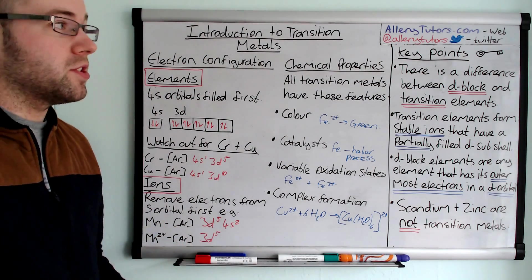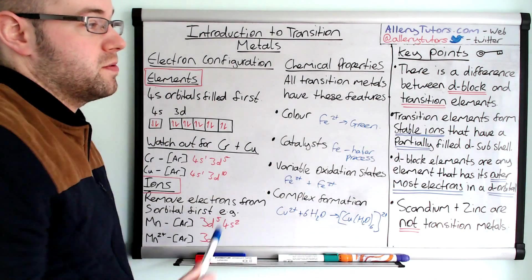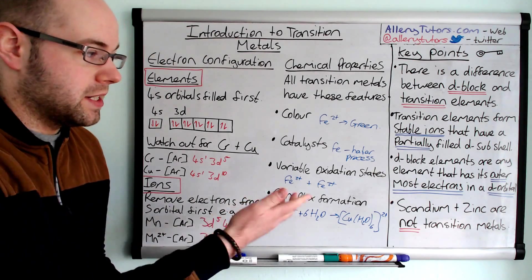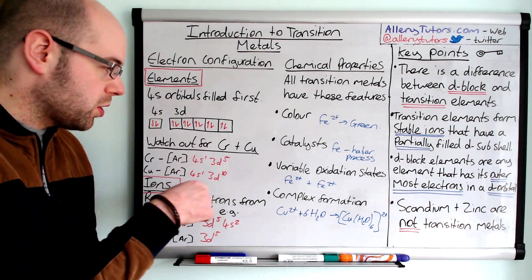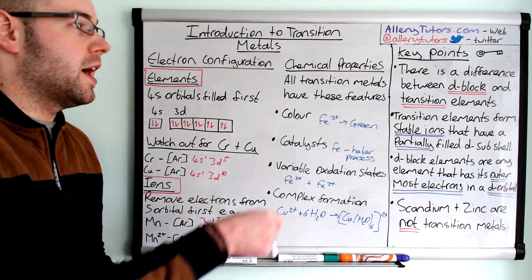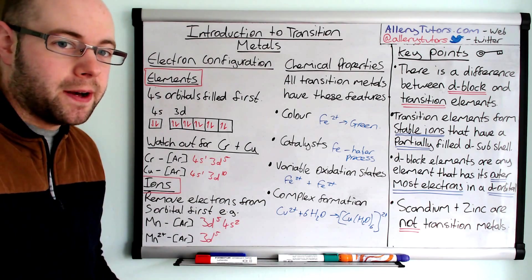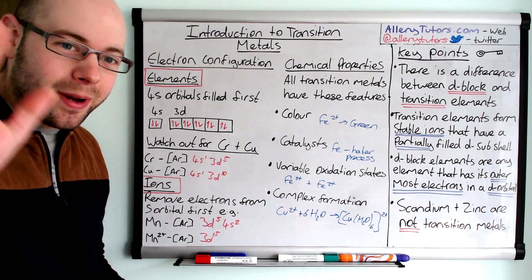So, that's it. You do need to know, just in summary, you need to know the definition between a transition metal and a D-block element. You also need to know the electron configurations and watch out for chromium and copper, and chemical properties as well. But that's it. Hope that helps. Bye.